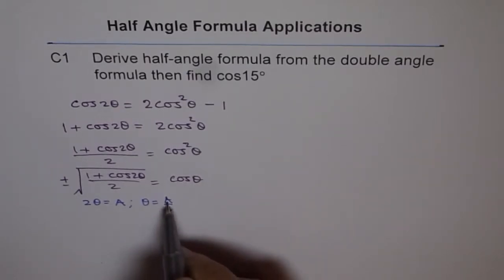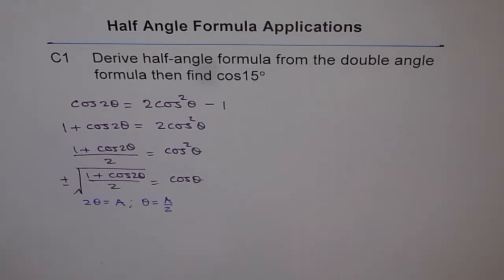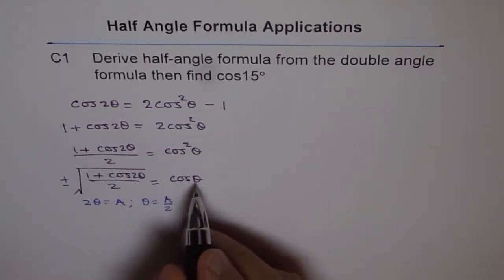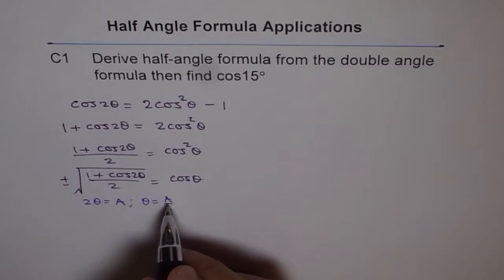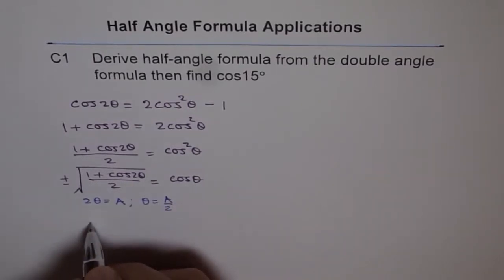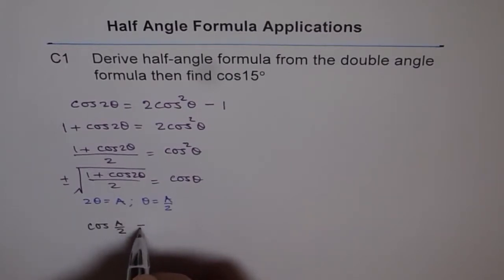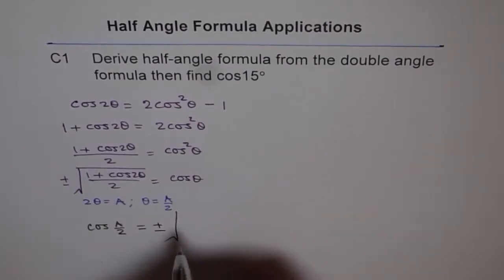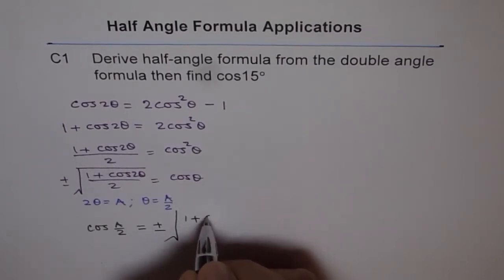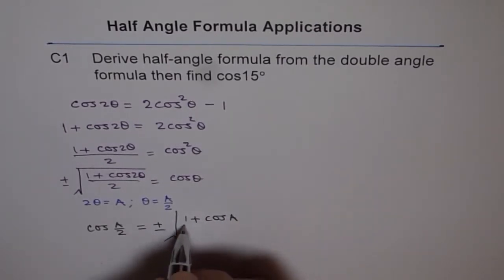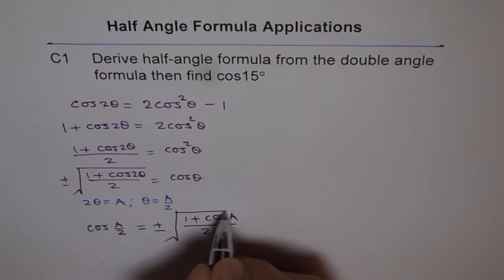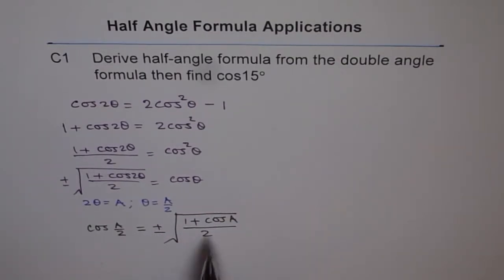So this θ will be replaced by a/2 and 2θ by a, and rewrite our formula. Let me write cos θ on this side with a. So cos θ is a over 2. I can write this as cos(a/2) = ±√[(1 + cos a)/2]. This is the half angle formula in terms of cosine which we are talking about.